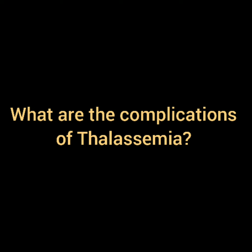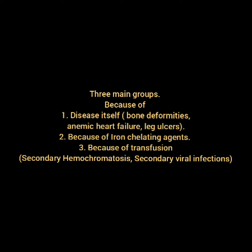Another question that can be asked is: what are the complications of thalassemia? The complications are divided into three main groups: number one, because of the disease itself — bony deformities, anemic heart failure, and leg ulcers; number two, because of iron chelating agents; and number three, because of transfusions — which could be in the form of secondary hemochromatosis and secondary viral infections.